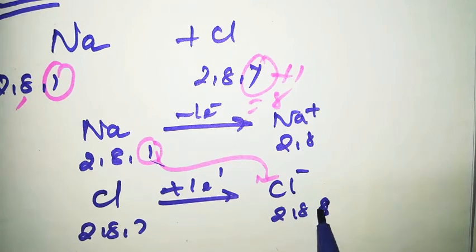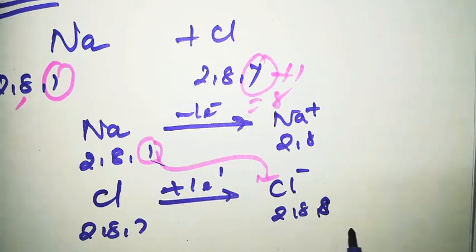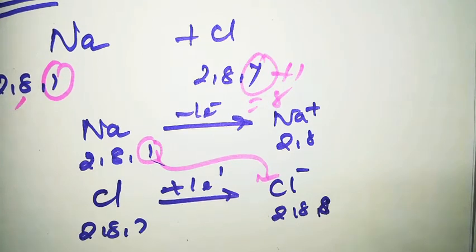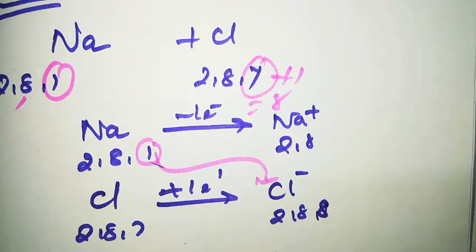How many electrons are transferred - one, two, three, or four - depends upon the atomic number and valency. Now I will discuss some elements with their atomic number and valency, looking at how many electrons are in the K, L, M, and N shells.